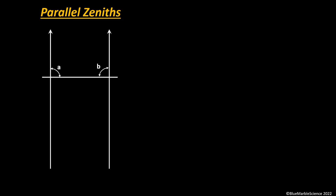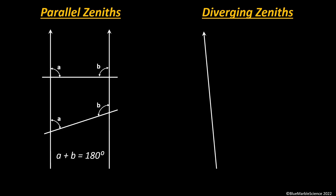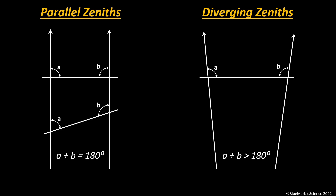Let's look at this diagram. If the zeniths were parallel, and we cut those two zeniths with a line, these two angles have to equal 180 degrees — we can prove that with Euclidean geometry. It doesn't matter what line we cut those two zeniths with; the sum of the two angles still always has to be 180 degrees. But for diverging zeniths that are not parallel with each other, the sum of those two angles has to be greater than 180 degrees, regardless of the orientation of that line.